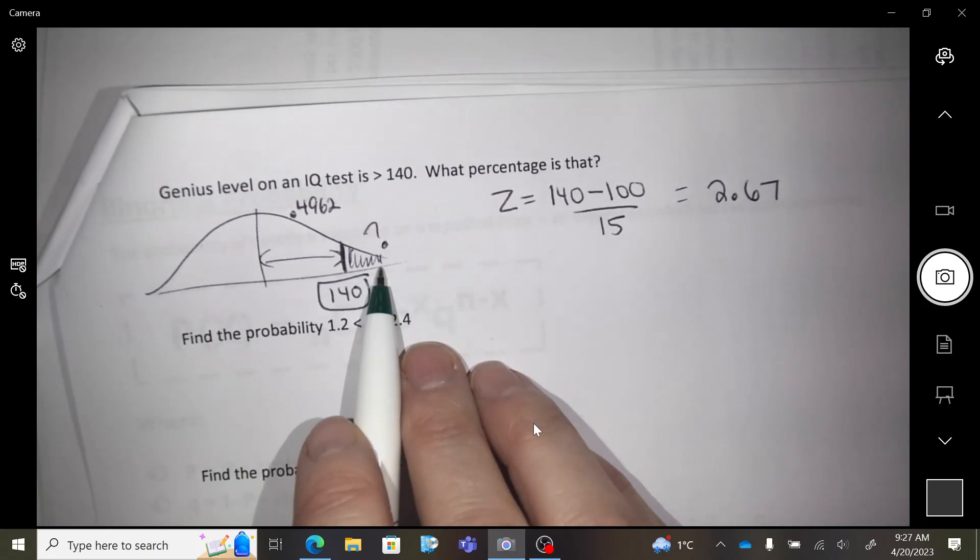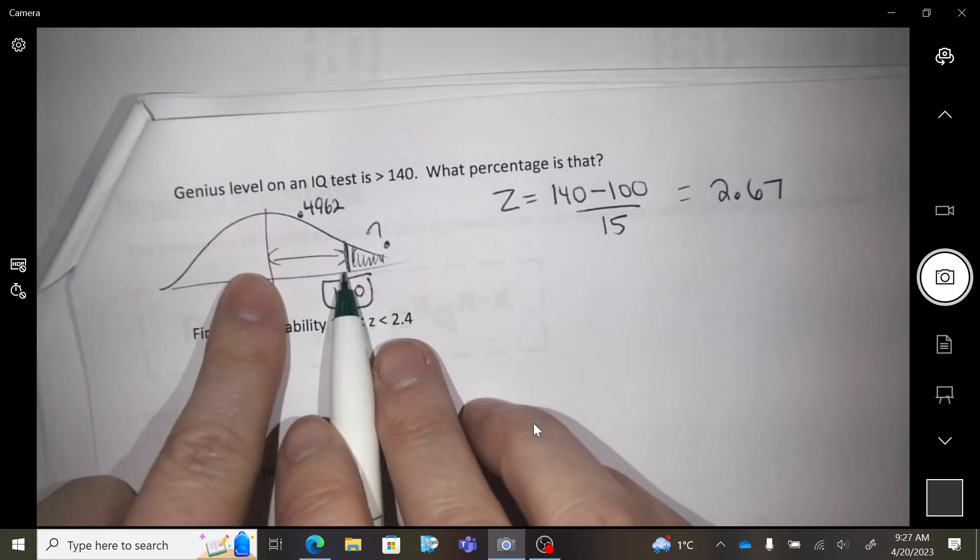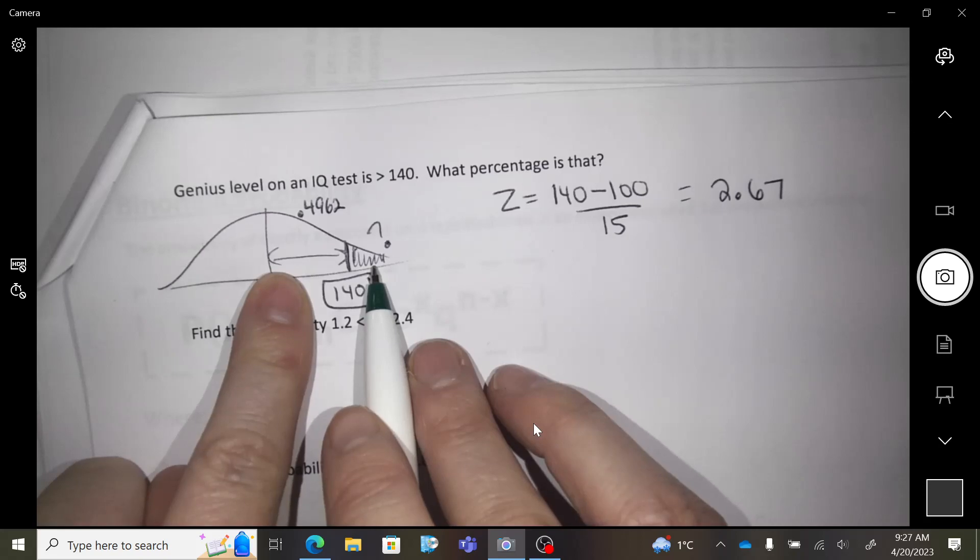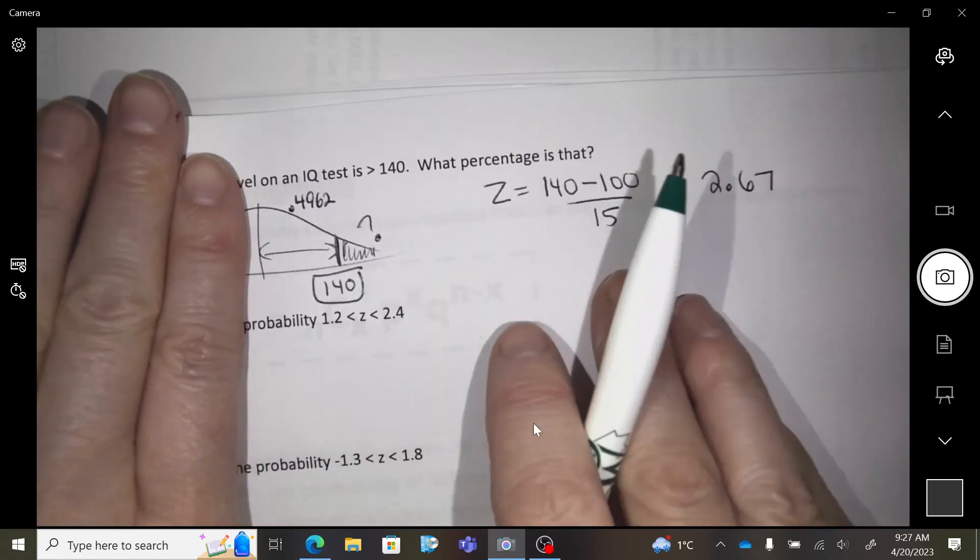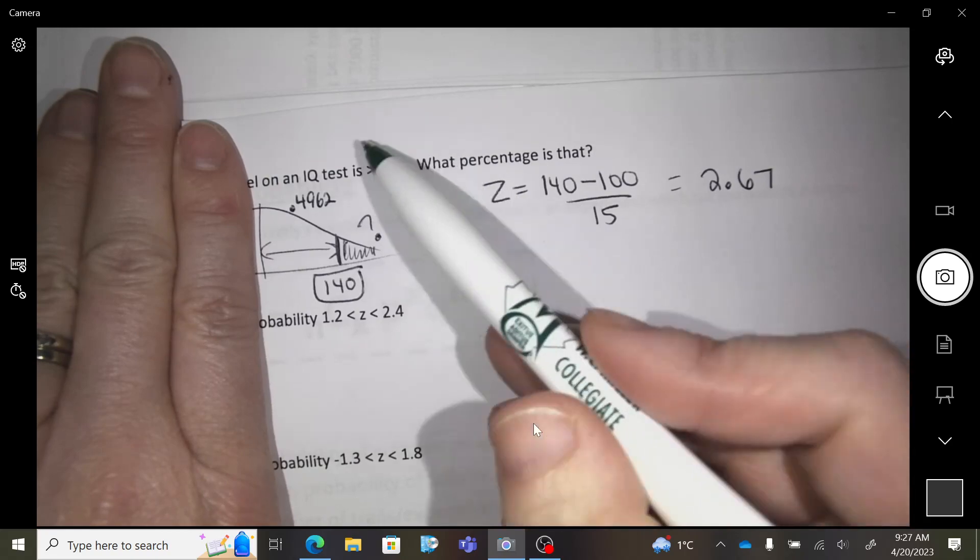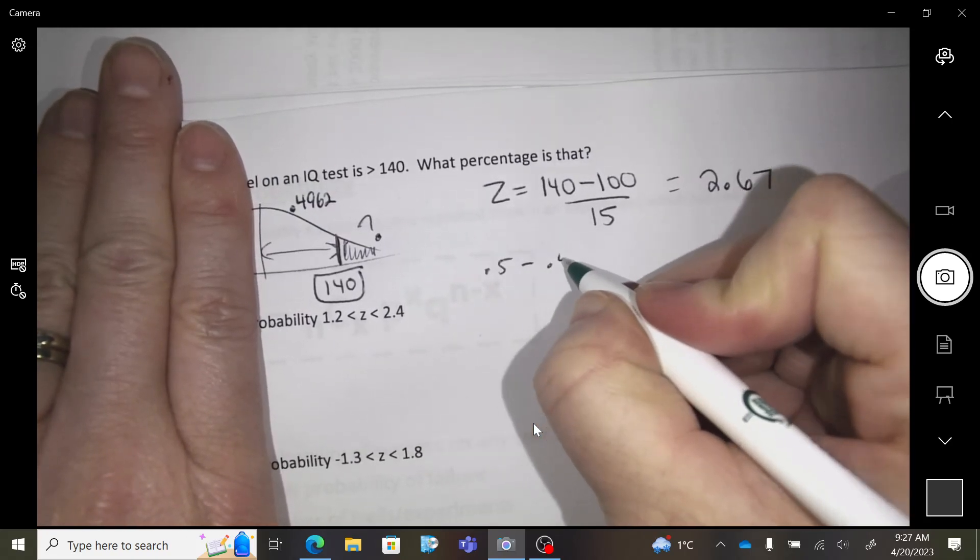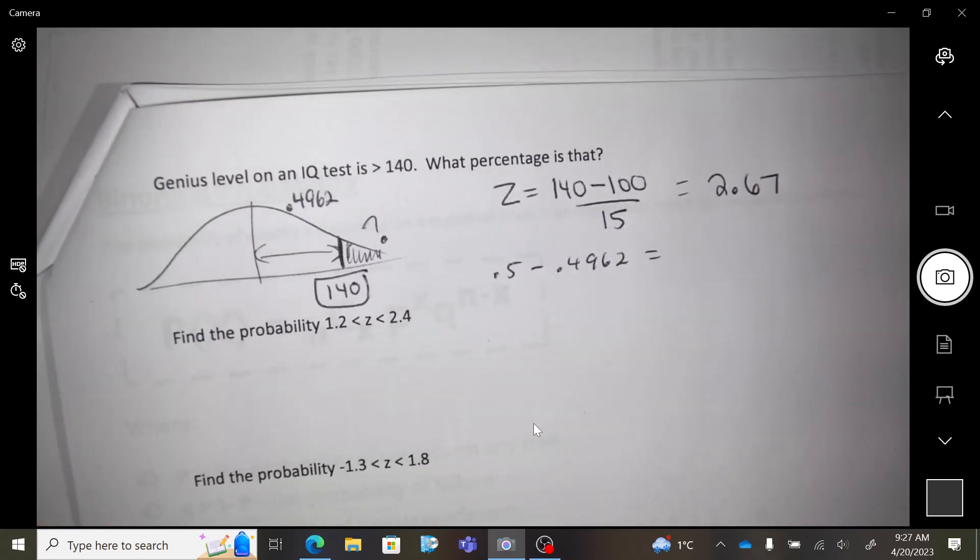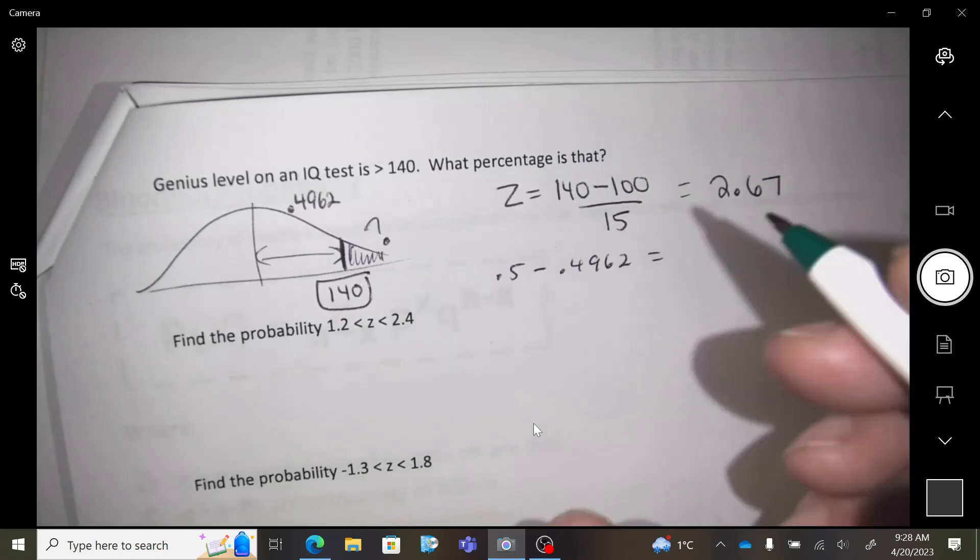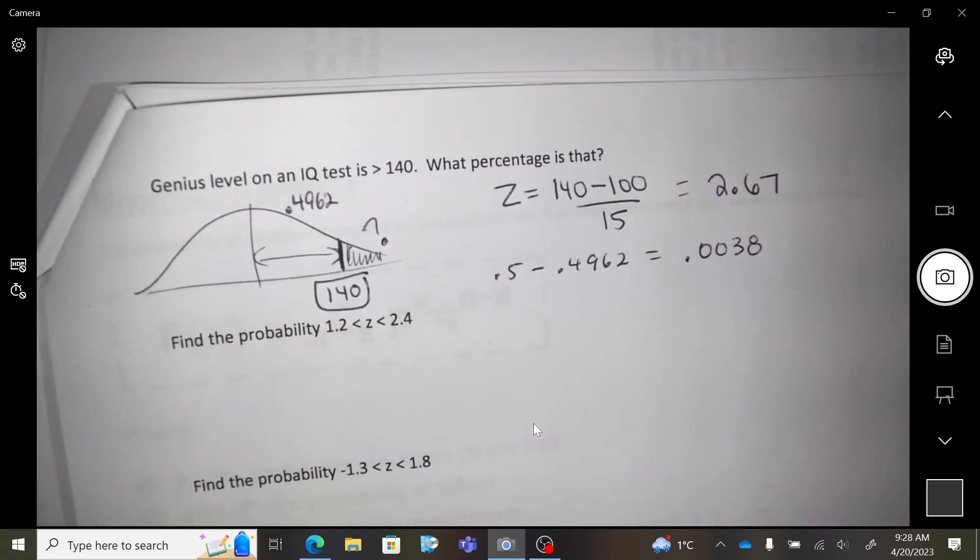So how do I find this question mark? What would I do to get that? If I know this, how do I get the leftover there? Subtract. What would I do if I just wanted to use this half? What is this whole half? 0.5. So 0.5 minus leaves me with that little piece. Does that make sense? 50% is over the half and there's that much in between. So that is 0.38% of the population, a very small part of the population.